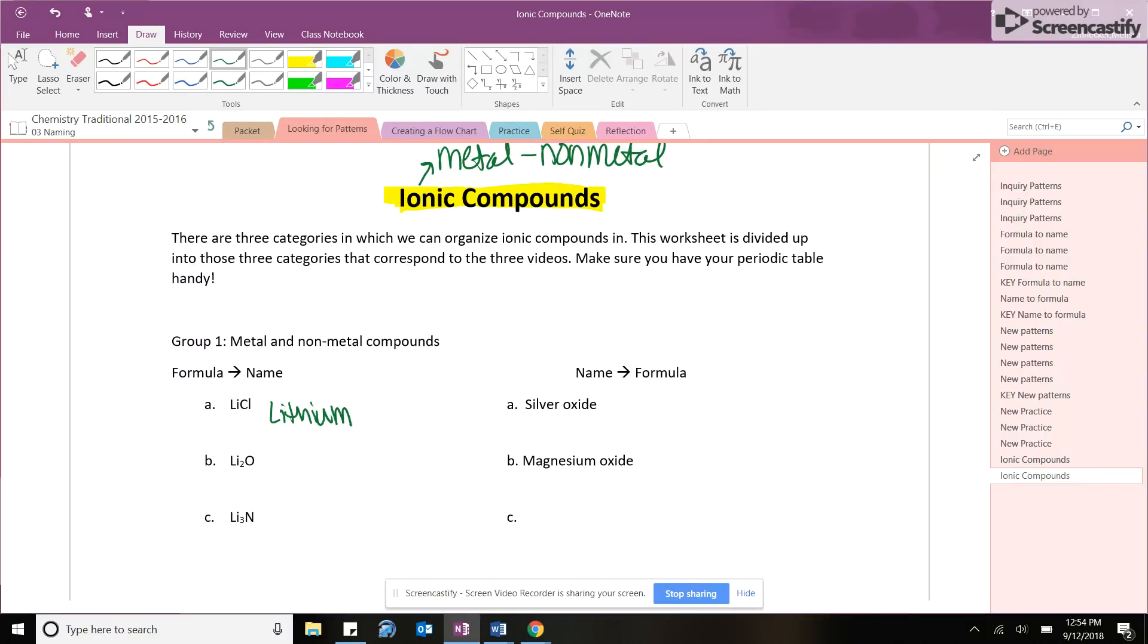For the first one, this LiCl, with the first metal, you always get to write down what its name is. Just copy and paste it from the periodic table. So Li is a symbol for lithium. By the way, guys, while Ms. Zinniger is doing this, make sure you have your periodic tables out. Please pause and go get it if you don't.